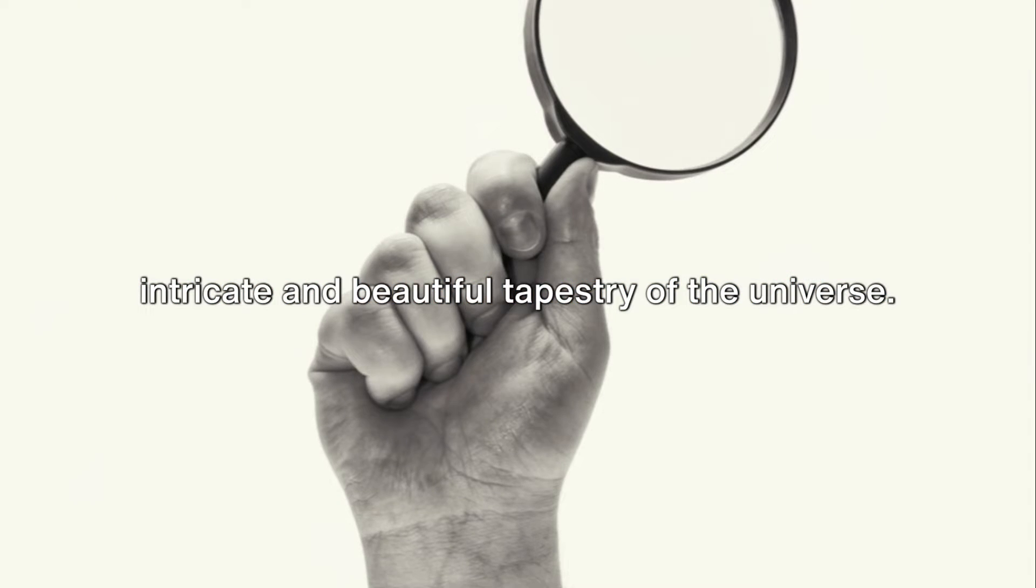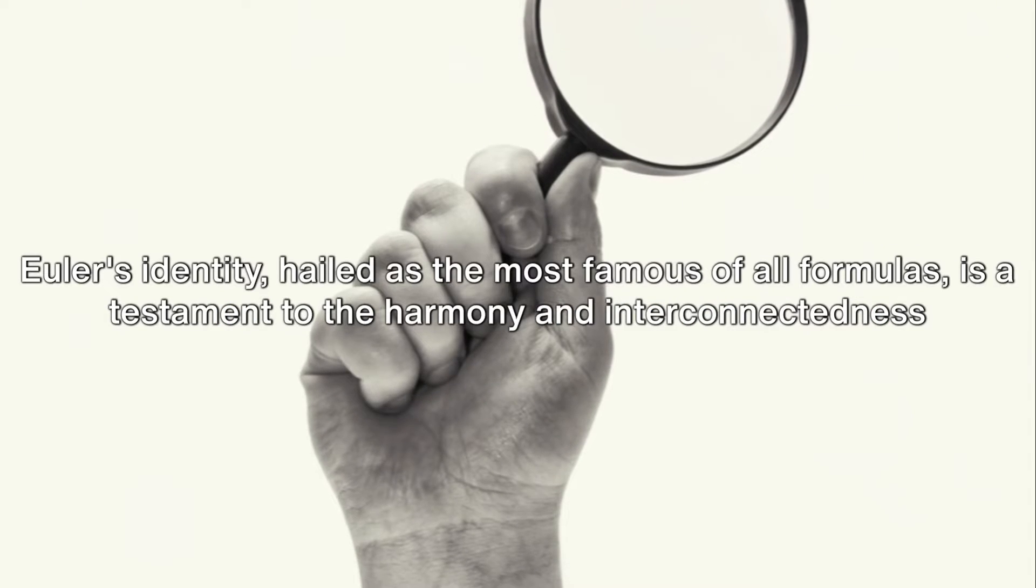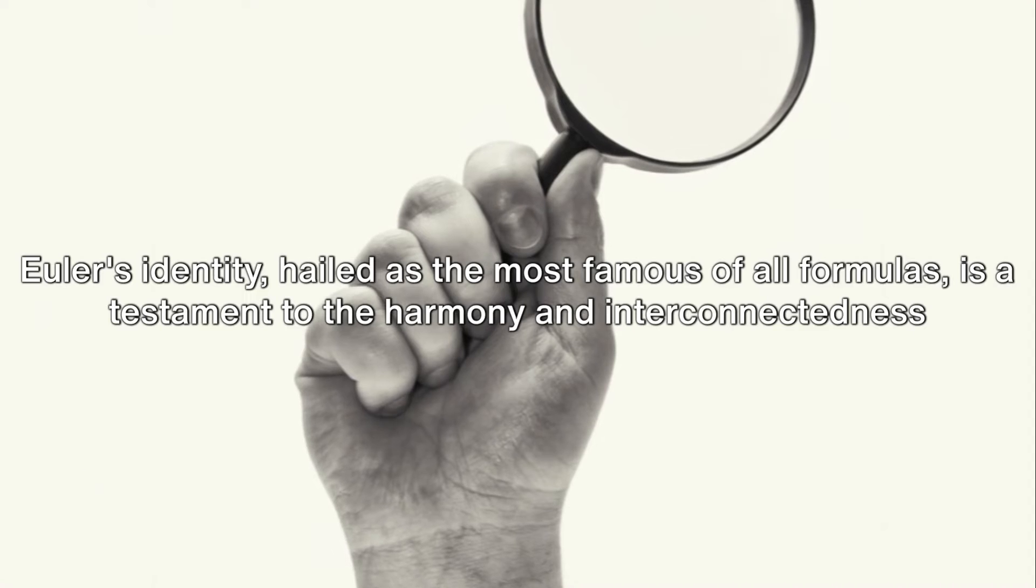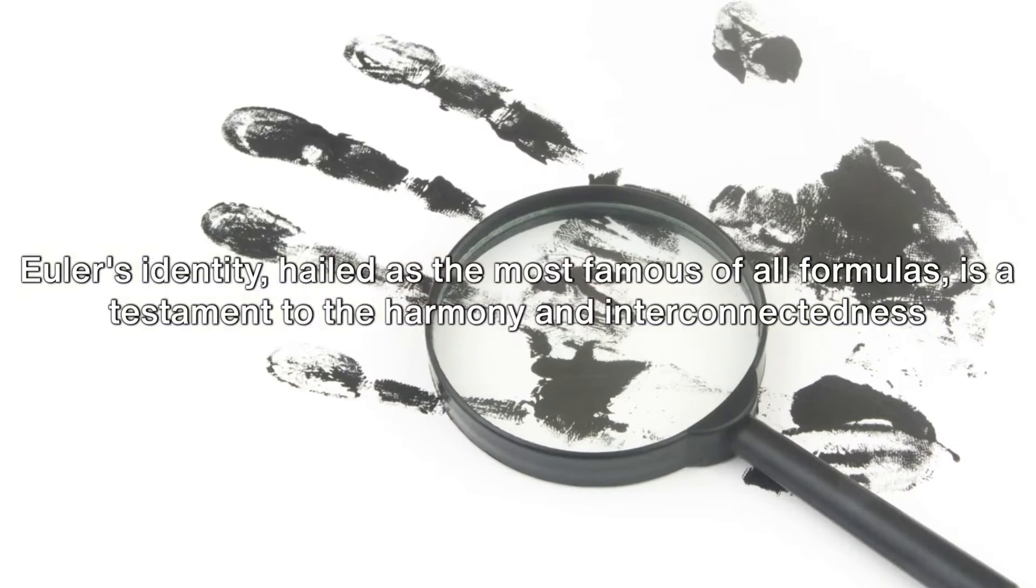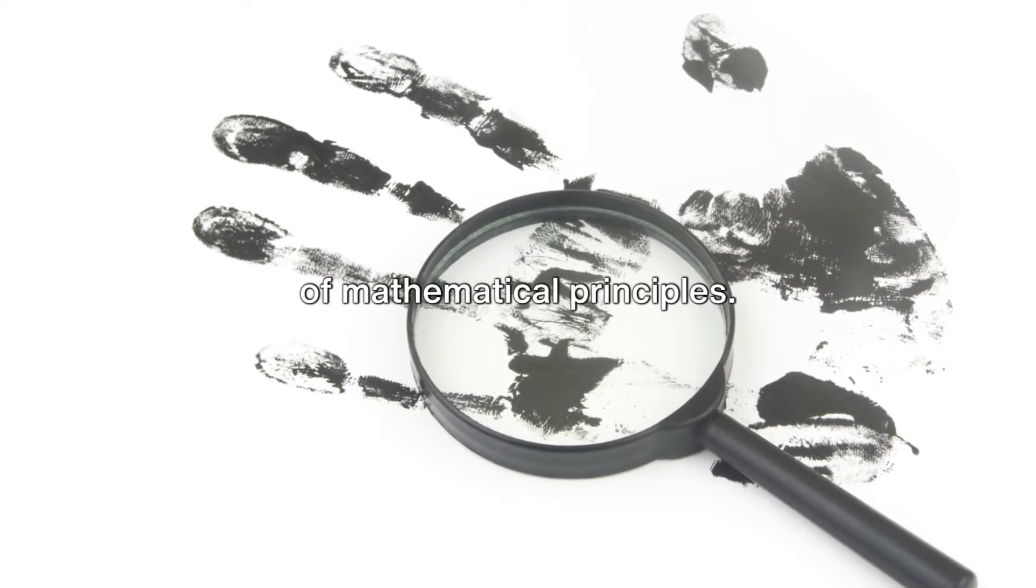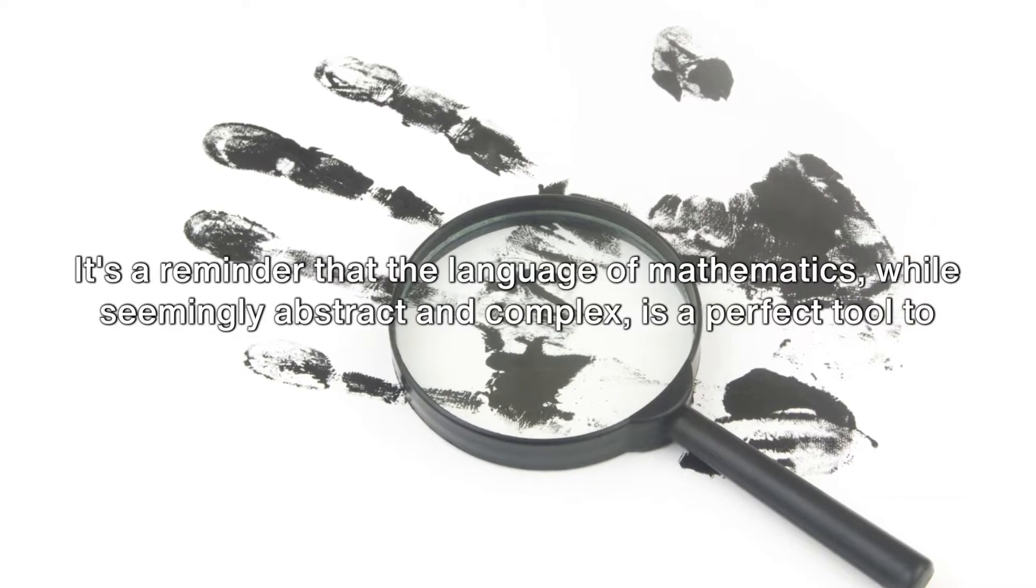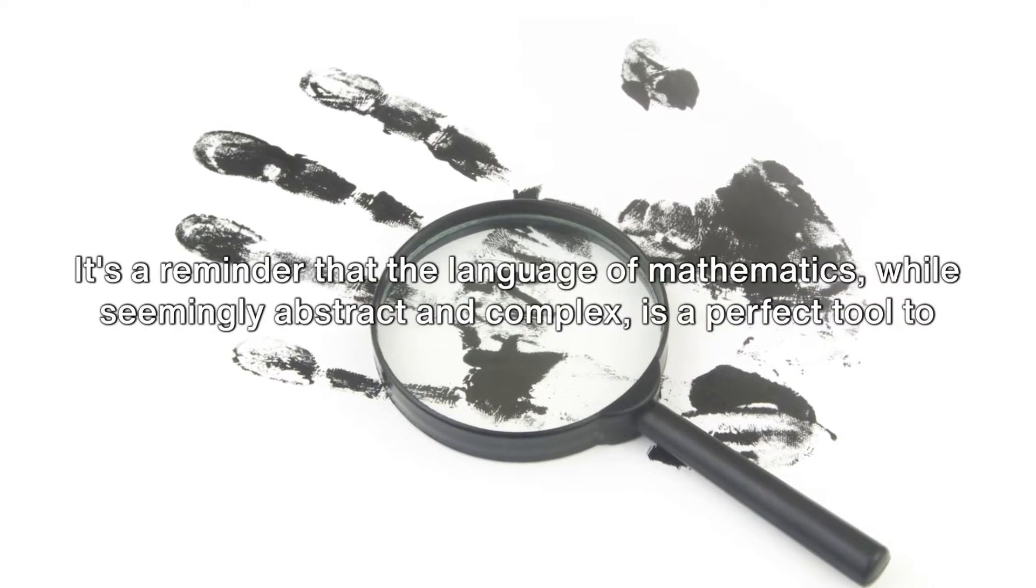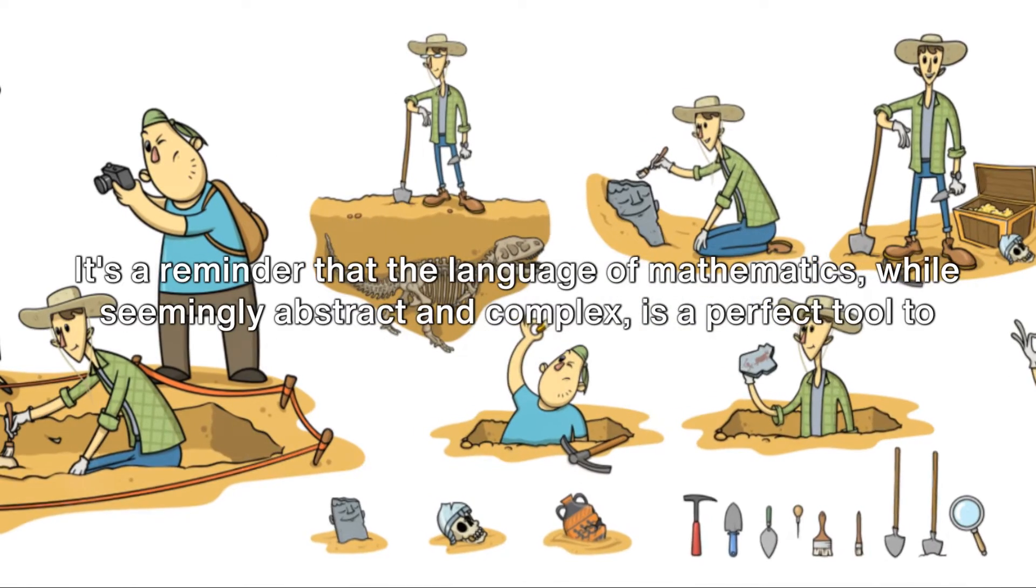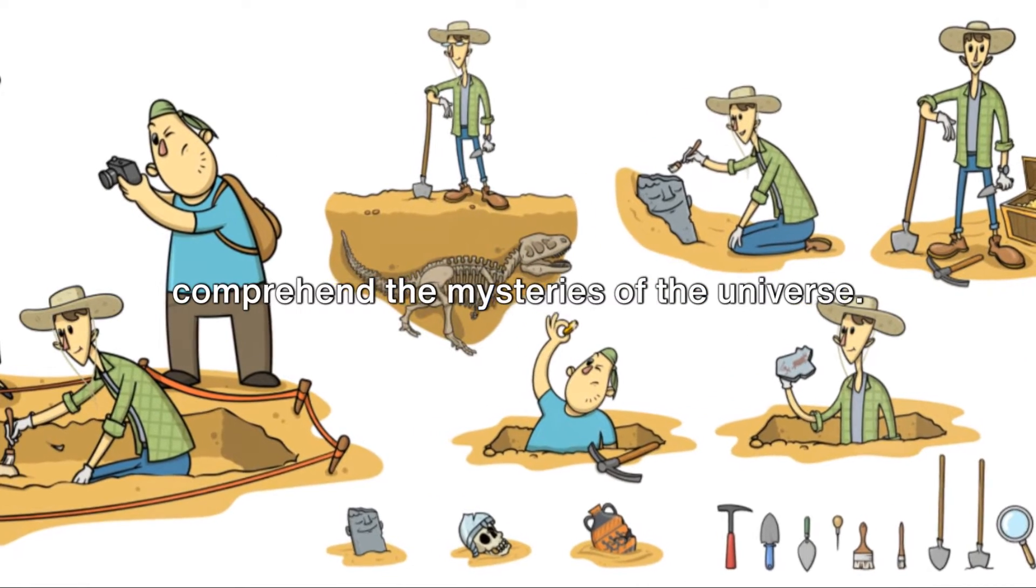Euler's identity, hailed as the most famous of all formulas, is a testament to the harmony and interconnectedness of mathematical principles. It's a reminder that the language of mathematics, while seemingly abstract and complex, is a perfect tool to comprehend the mysteries of the universe.